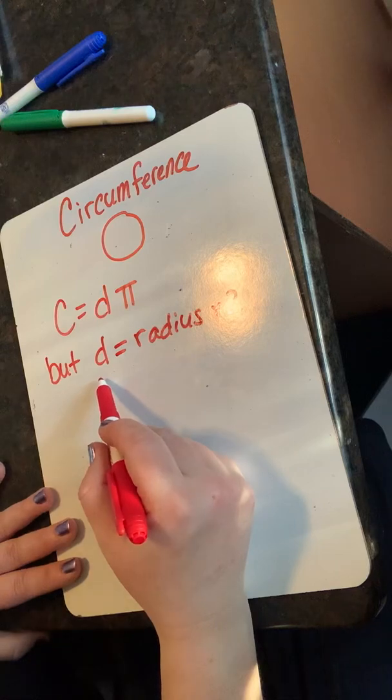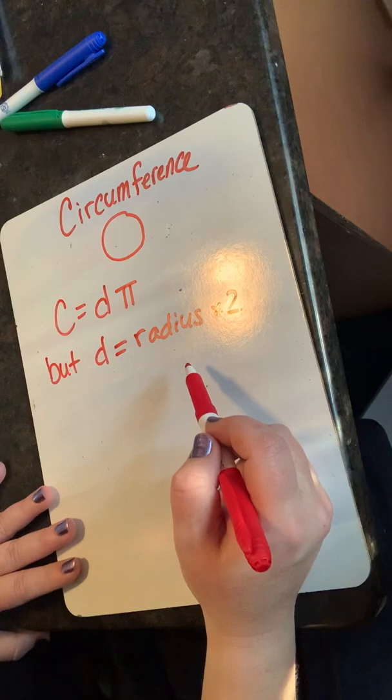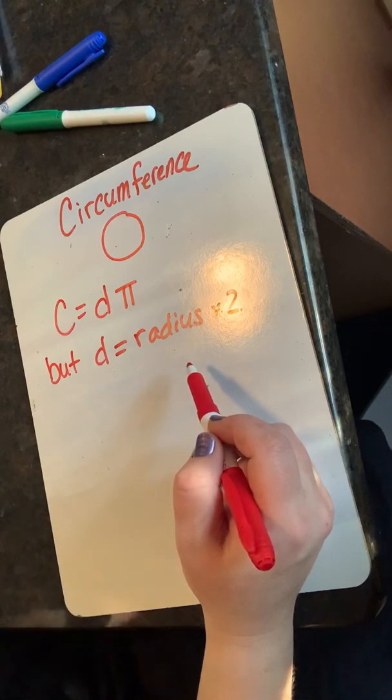But diameter equals radius times two. Pero el diámetro es igual al radio por dos.